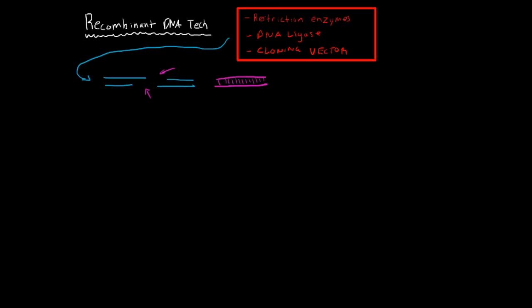Next is the cloning vector. Once they have identified what restriction enzymes they want to use, where they want to cut and where they want to seal, they will use a cloning vector.